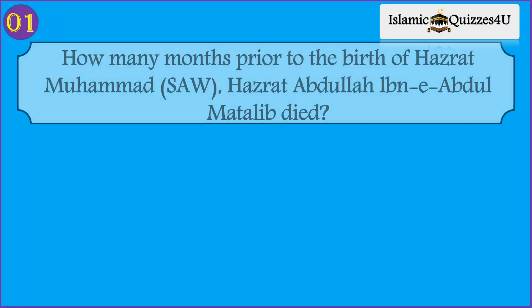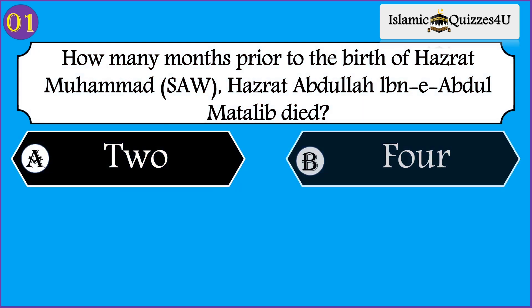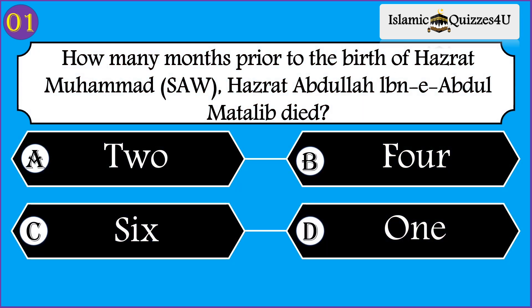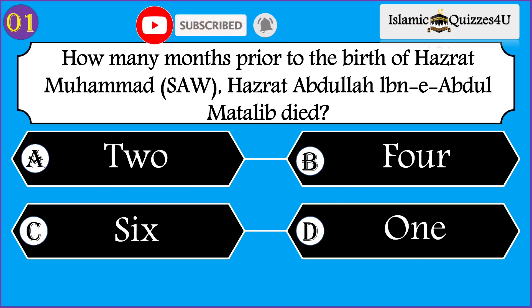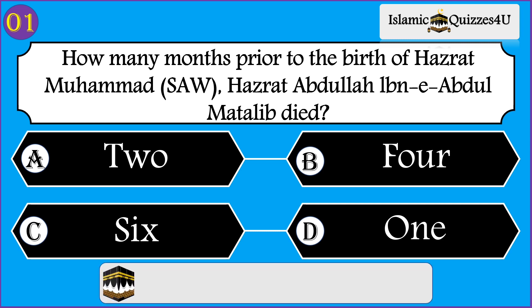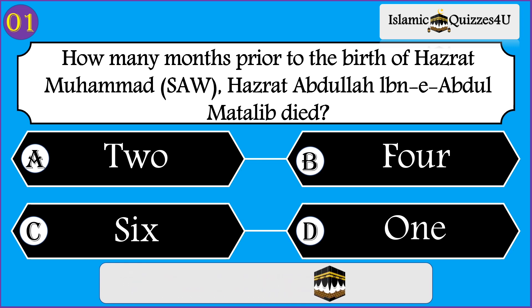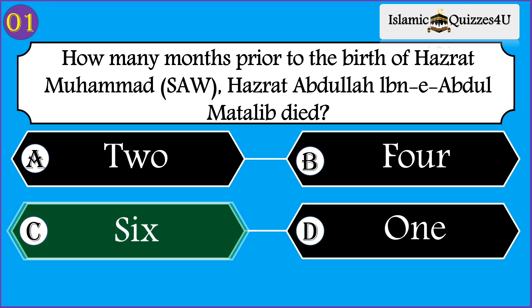Question number one: How many months prior to the birth of Hazrat Muhammad (sallallahu alayhi wa sallam) did Hazrat Abdullah ibn Abdul Muttalib die? Option A: two. Option B: four. Option C: six. Option D: one. Correct option is six.